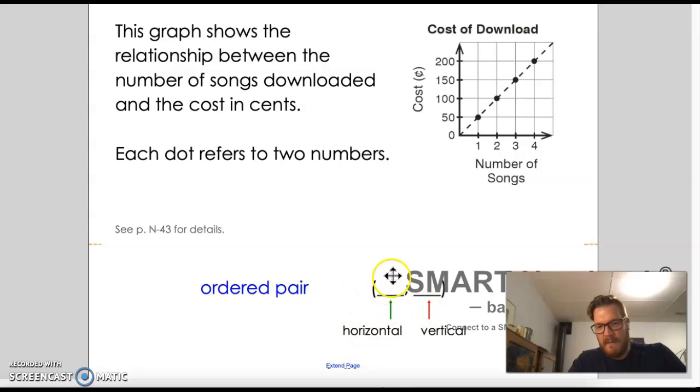And so it's a little hard to see because it's kind of below the watermark, but the way ordered pairs work is they are represented in brackets, and there's two numbers. The first number is the horizontal number. So for example, if you go along here, if it's one song, then it's 50 cents. Because the next number is how high up vertically you are. So horizontal, like the horizon line, vertical is up and down. So you talk about the horizontal number first, and then the vertical number.